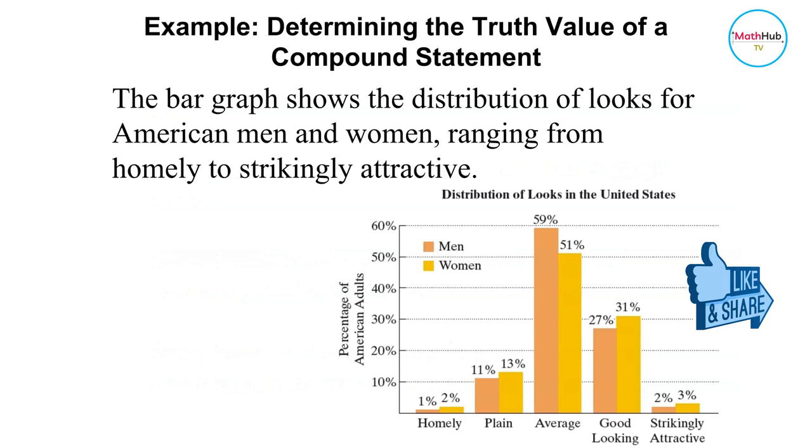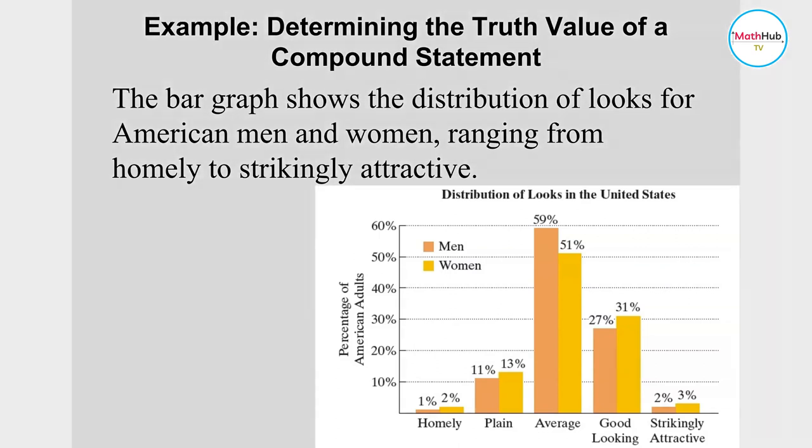For example, the bar graph shows the distribution of looks for American men and women ranging from homely to strikingly attractive. This color is for men and this yellow is for women. We have homely, plain, average - where a lot of people look average - good looking, and then few are strikingly attractive.